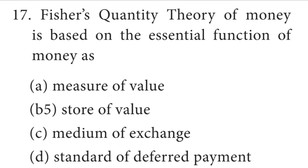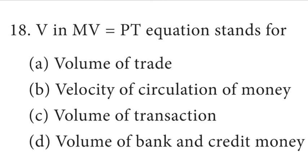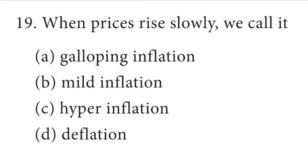Question number 17: Fisher's quantity theory of money is based on the essential functions of money as a medium of exchange. Question number 18: V in MV = PT equation stands for velocity of circulation of money. Question number 19: When prices rise slowly, we call it mild inflation.